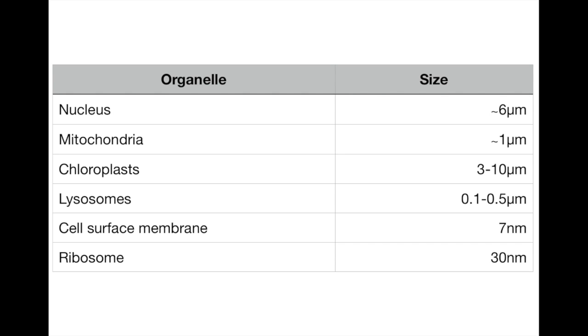Then we're going to look at the size of organelles. The nucleus is about 6 micrometers, the mitochondria 1 micrometer, chloroplasts 3 to 10, lysosomes 0.1 to 0.5. The cell surface membrane is 7 nanometers thin, a little bit bigger than the rest of the membranes inside the cell, which are about 4 to 5 nanometers. The ribosome, a very small structure, is only 30 nanometers.